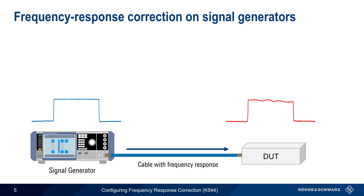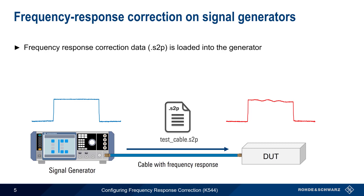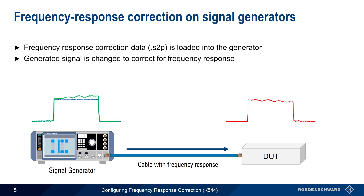On signal generators, frequency response correction is used to essentially pre-distort the transmitted signal in such a way that it counteracts the frequency response of any components or devices between the generator output and the device under test, or DUT. The frequency response of these components or devices is measured beforehand, typically using a VNA, and stored in S2P or touchstone files. Once this information has been loaded into the generator, the generator can calculate and apply the necessary modifications to the transmitted signal. In this way, the signal at the DUT input is identical to the original uncompensated signal.